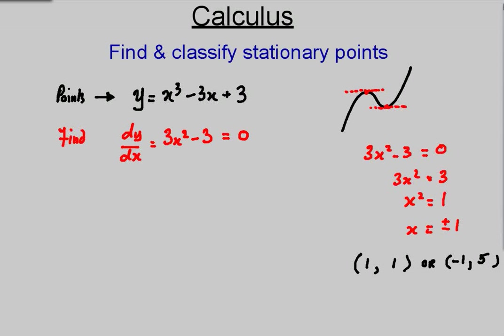Now we've found the two points. Next thing we need to do is classify these points. We can test the stationary points using the second differential, a very common use for the second differential. Differentiate again, so looking at the red expression here, 3x² becomes 6x, minus 3 disappears.